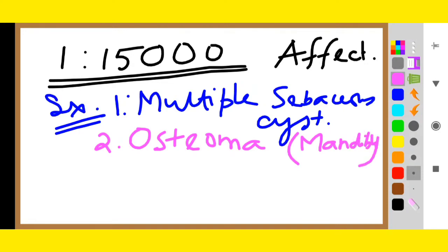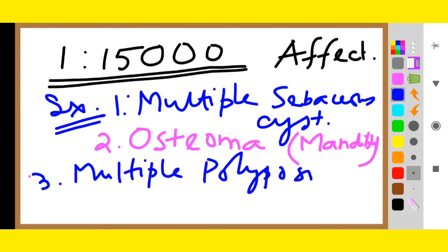Number three is multiple polyposis of the large intestine. So, number one is sebaceous cyst, number two is osteoma, number three is polyposis. And sometimes you can also get desmoid tumor.